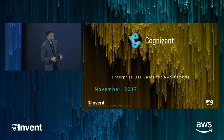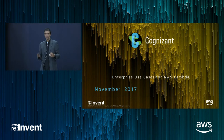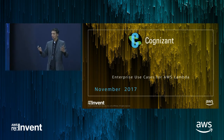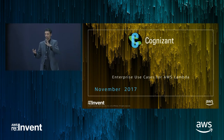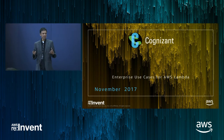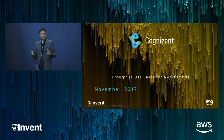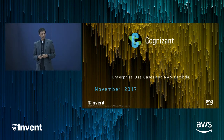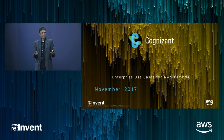Today I'm going to talk about some of the use cases that we have implemented with Lambda over the years. How many of you have implemented Lambda in your enterprise already or in your product? Cognizant has been working with AWS since the beta phase of Lambda. Lambda is based on the serverless computing paradigm, and it's a developer's delight. Since the advent of serverless computing, some popular use cases lend themselves to Lambda.